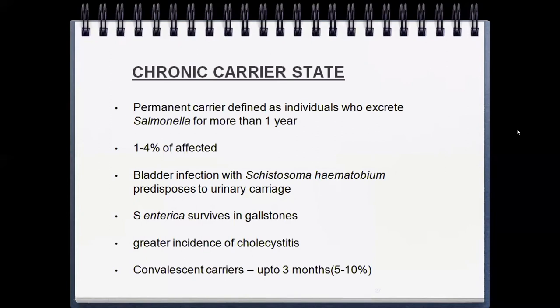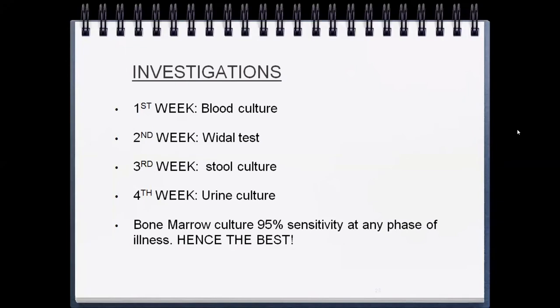Even after surviving four weeks of illness or receiving treatment, a patient can become a chronic carrier. A permanent carrier is defined as an individual who secretes Salmonella for more than one year; 1 to 4 percent of affected individuals may develop chronic carrier state. Bladder infection with Schistosoma haematobium predisposes to urinary carriage. Salmonella enterica survives in gallstones, with increased incidence of cholecystitis in these patients.